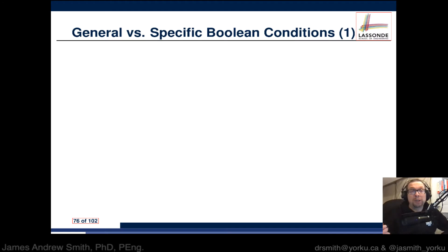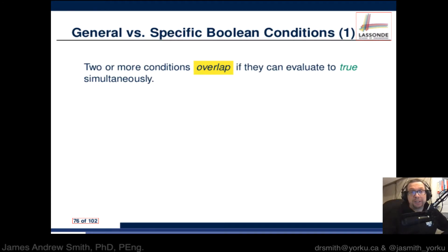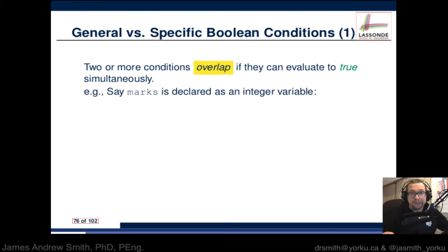Next up we're going to look at the difference between general and specific boolean conditions. Two or more conditions overlap if they evaluate to be true simultaneously.